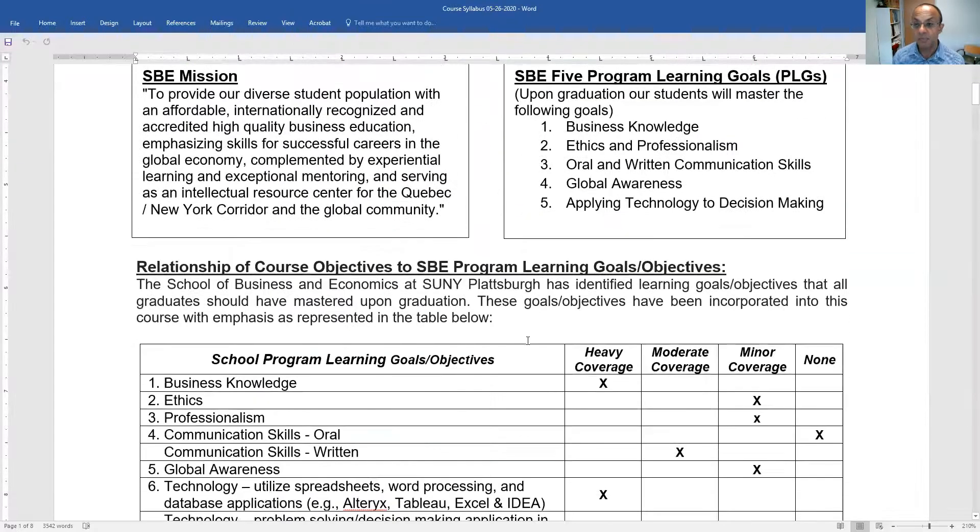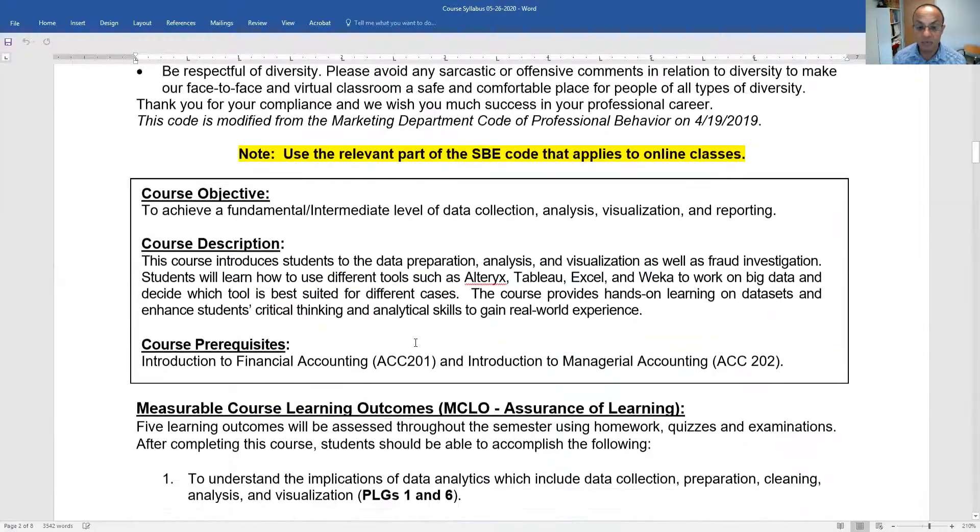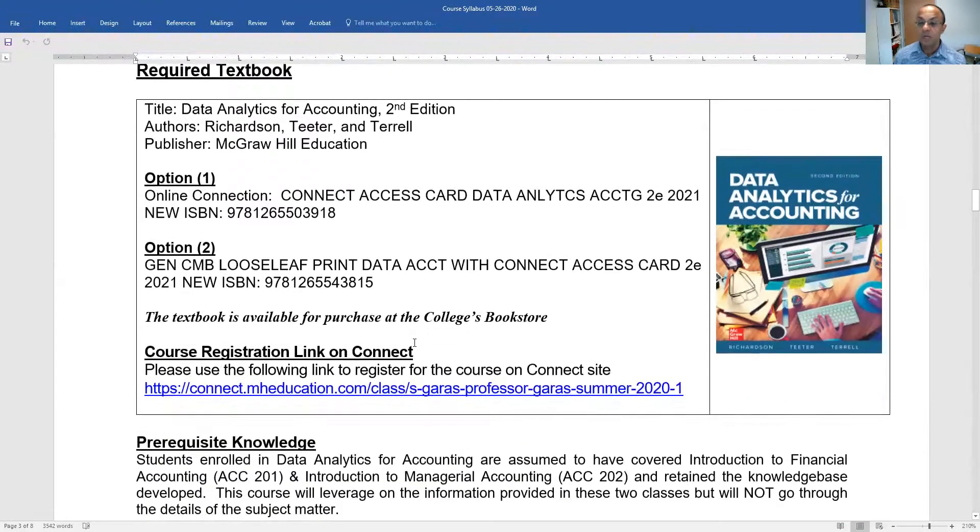Now, apart from the goals of the course, which you can read on the course syllabus, I would like to highlight the textbook. I know some students can afford to buy the textbook, some they don't, but this is the second edition of Data Analytics for Accounting, which is meant to be for year 2021. The book is brand new and I just got it from the publisher.